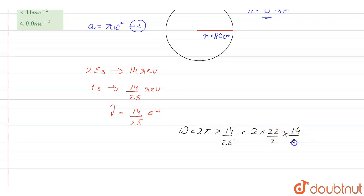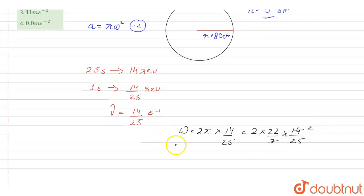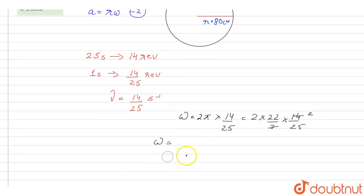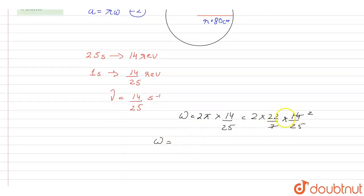So this will be equal to 3.52 radians per second.